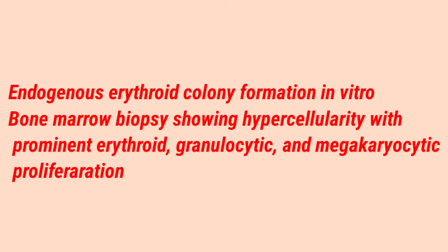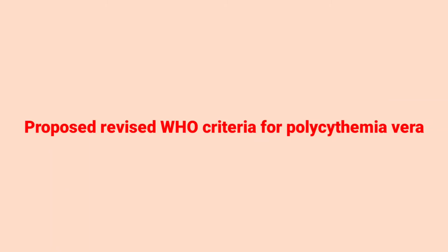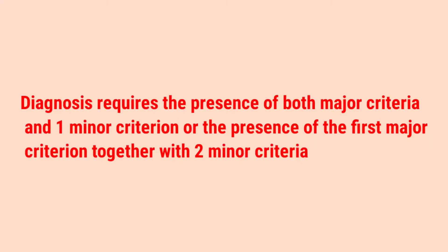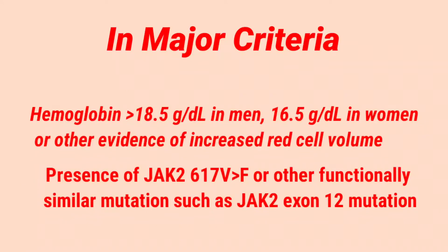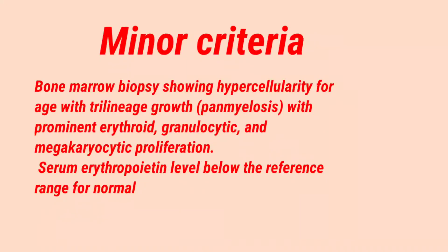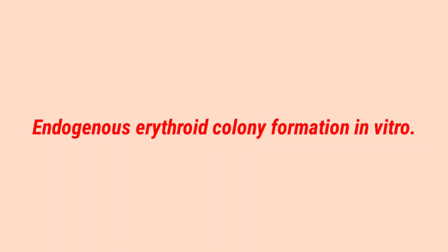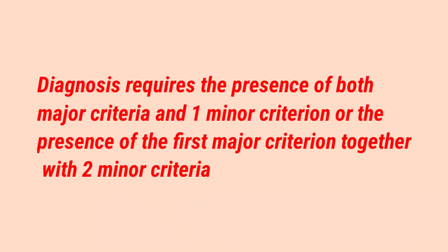The bone marrow biopsy shows panmyelosis. The diagnostic criteria include two major criteria: hemoglobin above 18.5 g/dL in men and 16.5 g/dL in women, and the presence of JAK2 mutations. Minor criteria include bone marrow hypercellularity or panmyelosis for age, low serum erythropoietin levels, and endogenous erythroid colony formation in vitro. Diagnosis requires both major criteria plus one minor, or the first major plus two minor criteria.